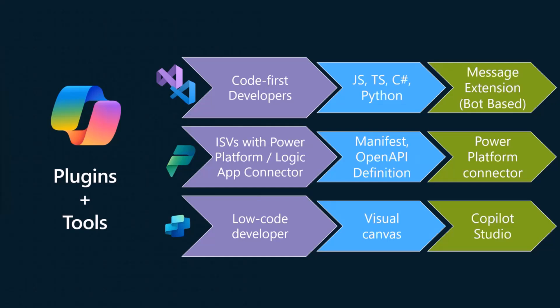Another option is you can build Power Platform connectors or Logic App connectors — there's a huge ecosystem here. However, in order to do this you need to be an ISV who is certified in the Power Platform to build connectors and put them in the store. So this will be more useful for ISV products initially. And if you're a low-code developer, you can also build plugins with Copilot Studio. It's something that's growing and improving and is certainly a great path for the low-code audience.